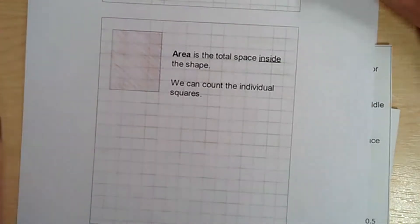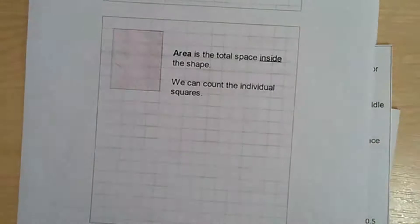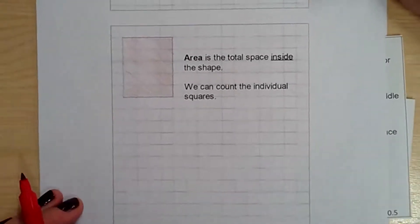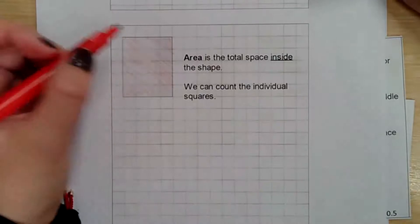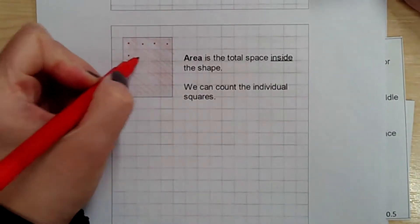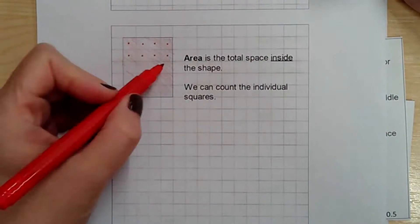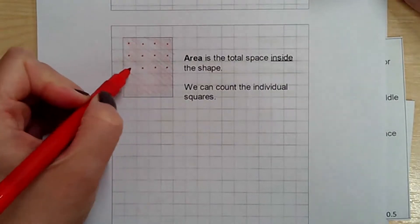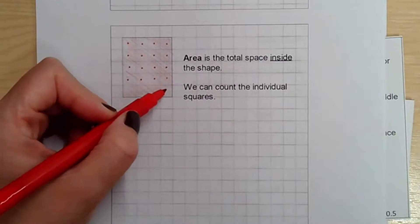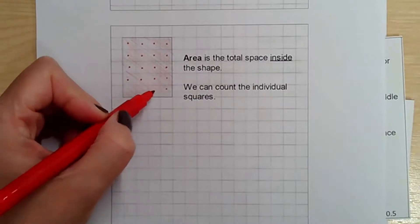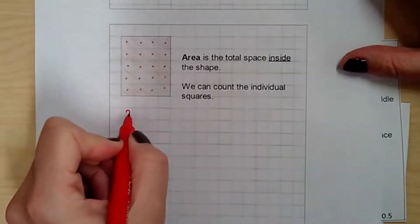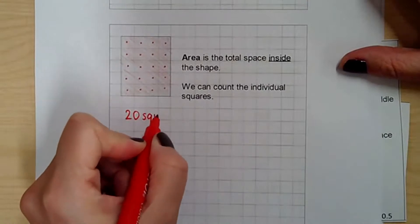We can count the area of this shape by counting each individual square. We're going to place a dot so that we know we've counted that square. Count with me: 1, 2, 3, 4, 5, 6, 7, 8, 9, 10, 11, 12, 13, 14, 15, 16, 17, 18, 19, 20. So the area of this shape is 20 squares.